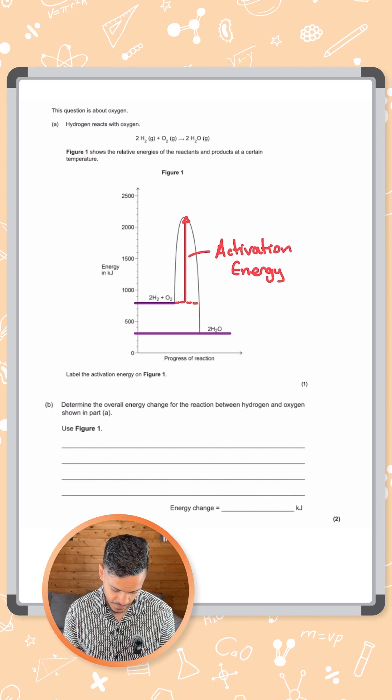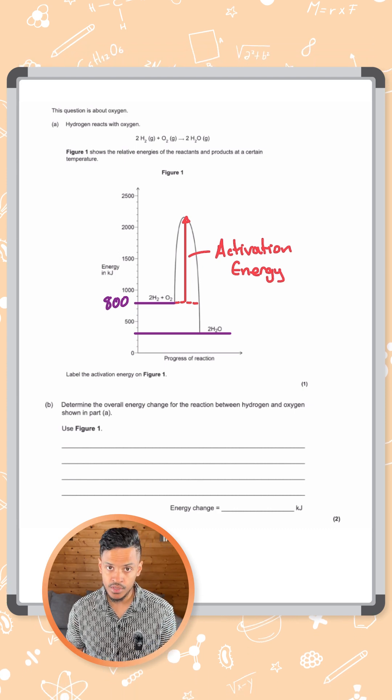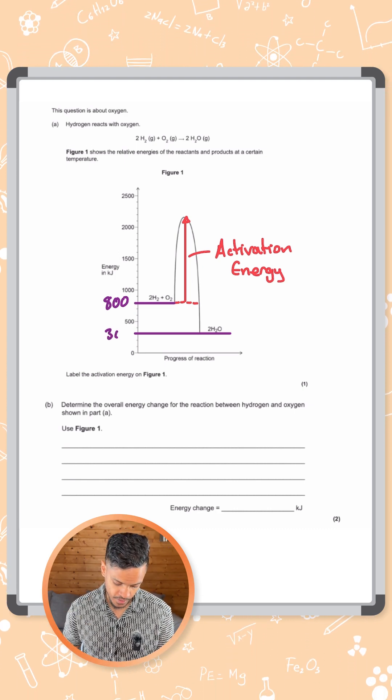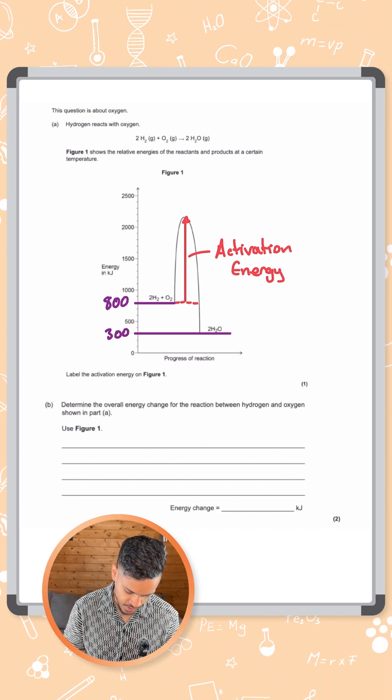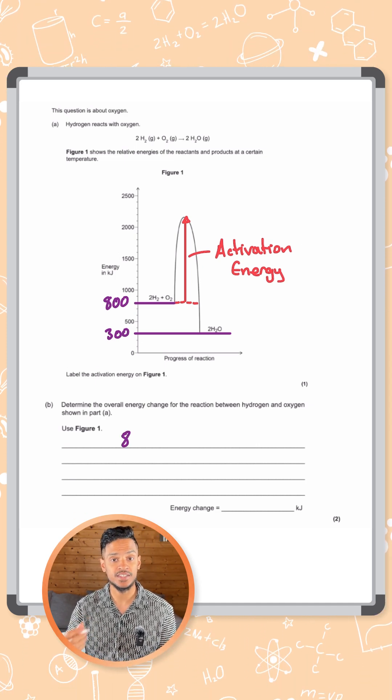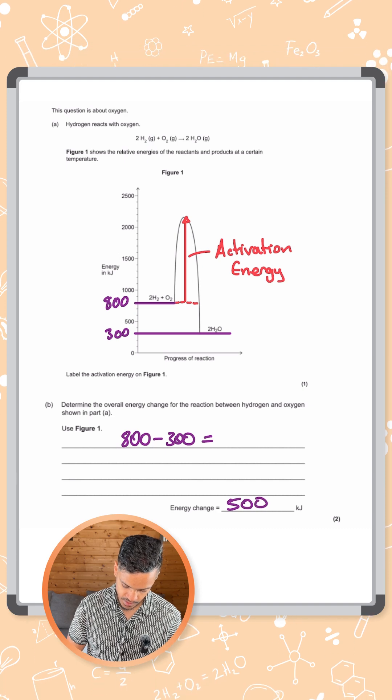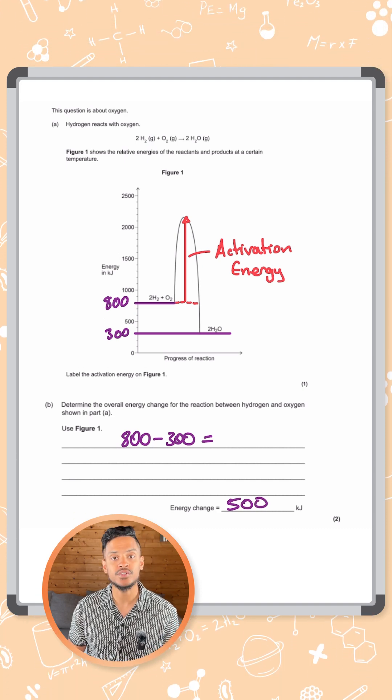If you read carefully here, you can see that the reactants are at 800 kilojoules and the products are at 300 kilojoules. So what we need to do to find the overall energy change is find the difference between 800 and 300, which gives us an answer of 500 kilojoules.